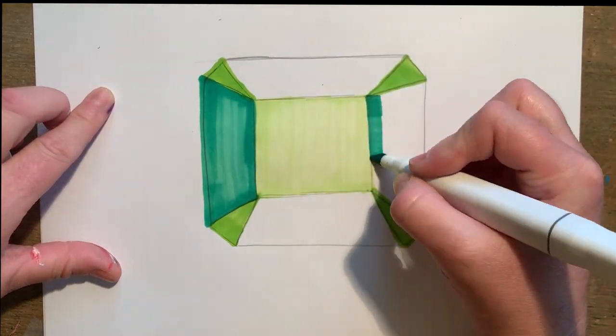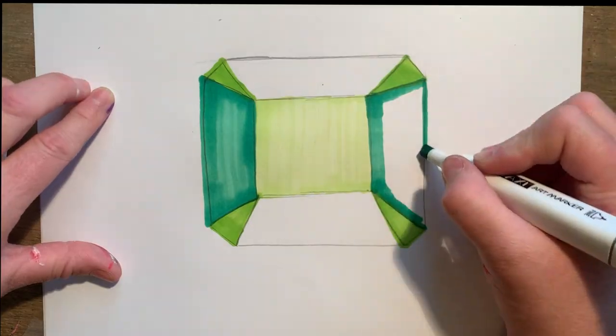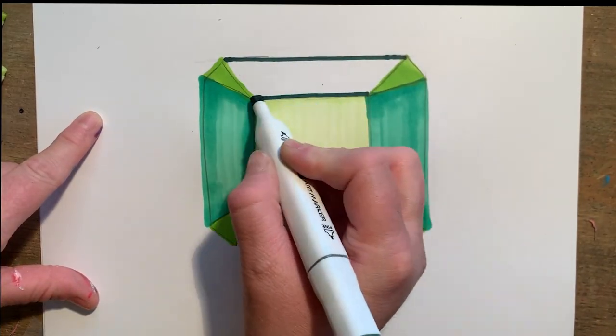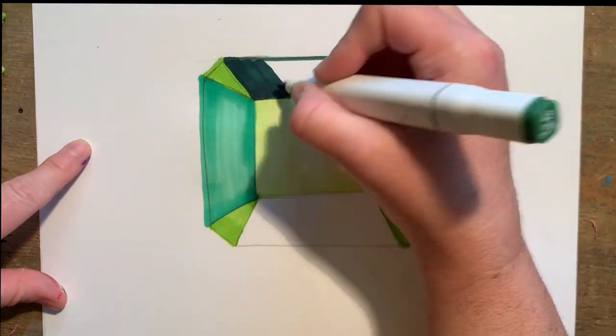On the two opposite edges, I've gone with a medium emerald green. And chosen my darkest green for the two opposite edges, top and bottom.